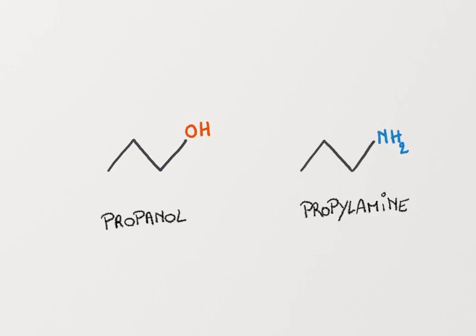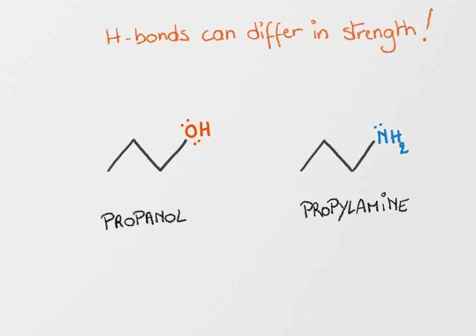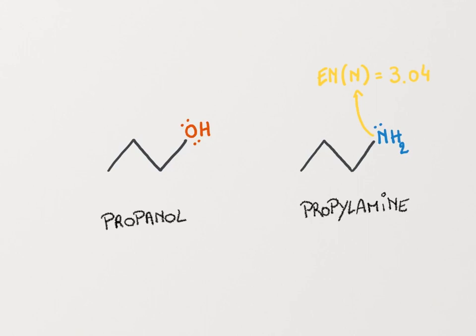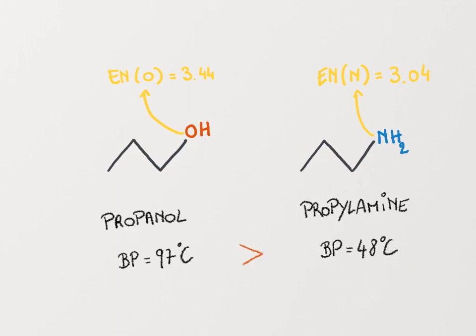In a second example, let's compare propanol versus propylamine. Both molecules can form hydrogen bonds as they both have hydrogen bond donor and acceptor groups. But we need to consider that these hydrogen bonds can differ in strength. The strength of hydrogen bonds depends on the electronegativity of the atoms involved. Nitrogen has a lower electronegativity than oxygen, which results in less strong hydrogen bonds. Propylamine will thus have a lower boiling point compared to propanol.